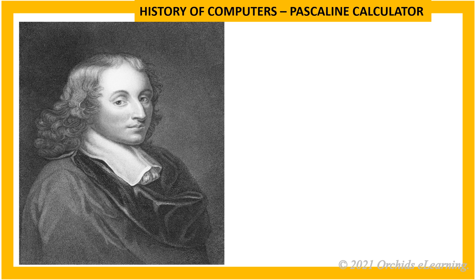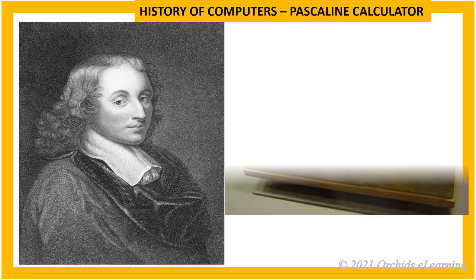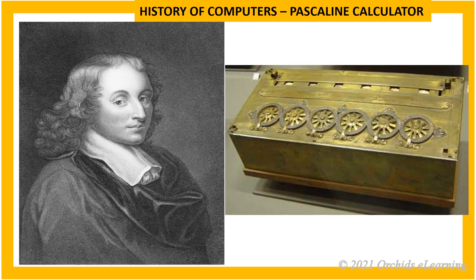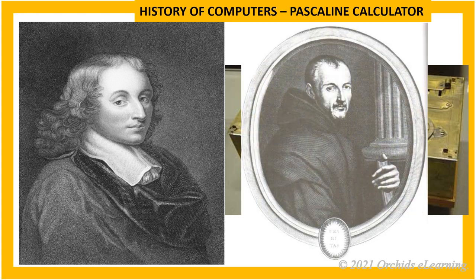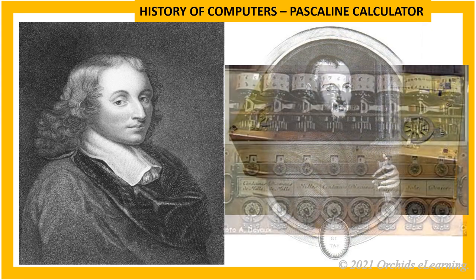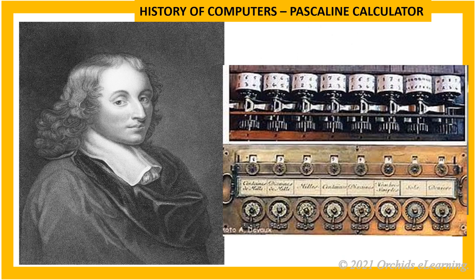Pascalin Calculator: In 1642, Blaise Pascal invented a machine for his father, who was a tax collector. He named the machine the Pascalin, or Arithmetic Machine. It could add and subtract numbers automatically.